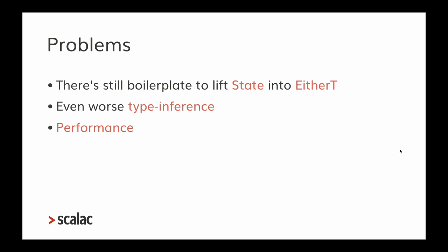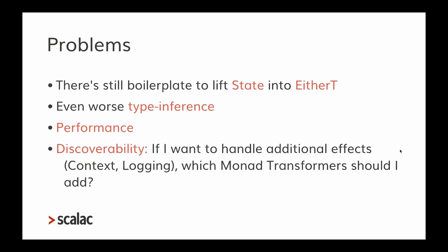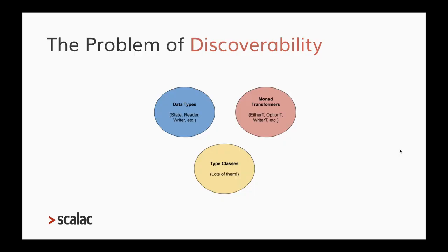There is also the critical problem of discoverability. If I want to handle additional effects like a Reader for context or logging, which monad transformers should I add? You need knowledge across several domains: concrete data types like State or Either, which monad transformers to use, in which order to stack them, and also type classes — because the Cats ecosystem uses type classes heavily.